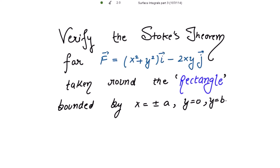We need to verify the Stokes theorem for this function taken round the rectangle bounded by x equal to plus minus a, y equal to 0, and y equal to b. So let's start with the solution.